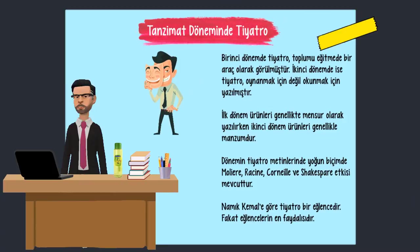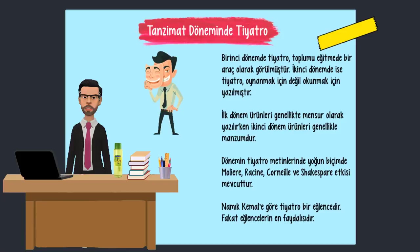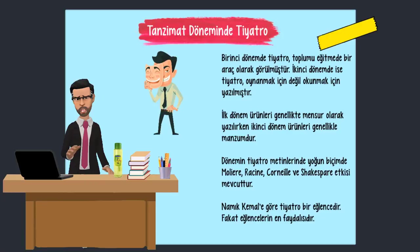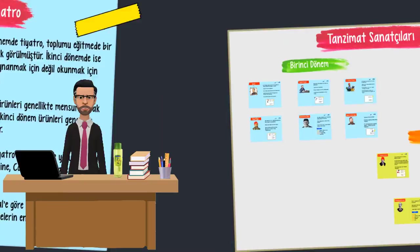Şimdi ise Tanzimat döneminde tiyatroya bakıyoruz. Birinci dönemde tiyatro, toplumu eğitmede bir araç olarak görülmüştür. İkinci dönemde ise tiyatro, oynanmak için değil okunmak için yazılmıştır. İlk dönem ürünleri genellikle mensur olarak yazılırken, ikinci dönem ürünleri genellikle manzumdur. Dönemin tiyatro metinlerinde yoğun biçimde Molière, Racine, Corneille ve Shakespeare etkisi görülür. Namık Kemal'e göre tiyatro bir eğlencedir, fakat eğlencelerin en faydalısıdır.